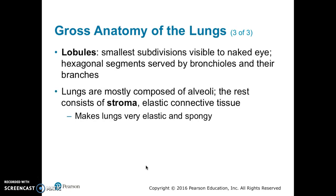The bronchopulmonary segments are further divided into lobules, which are the smallest subdivision visible to the naked eye. Lobules are hexagonal segments served by bronchioles and their branches. Lungs are mostly composed of alveoli, with the rest consisting of stroma, an elastic connective tissue that makes the lungs very elastic and spongy.